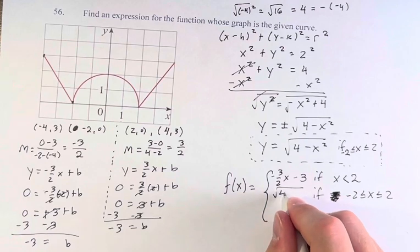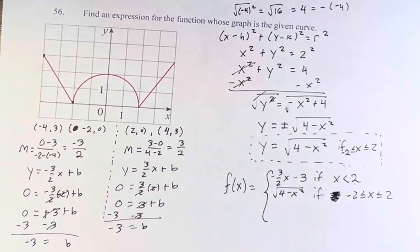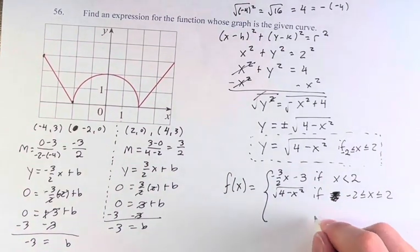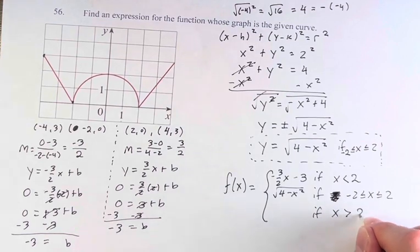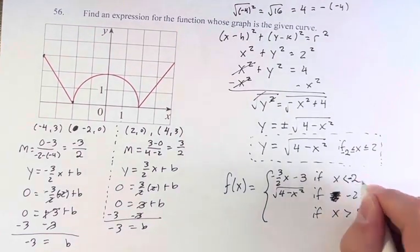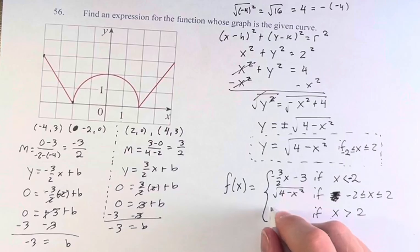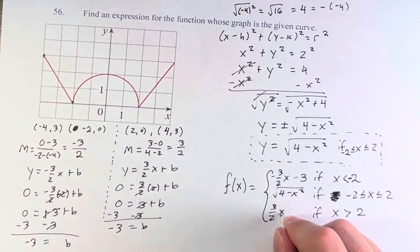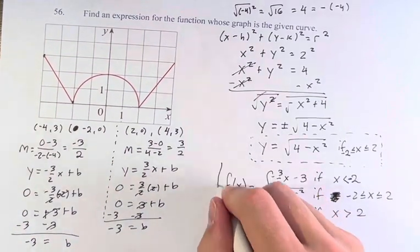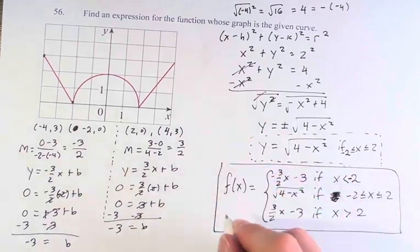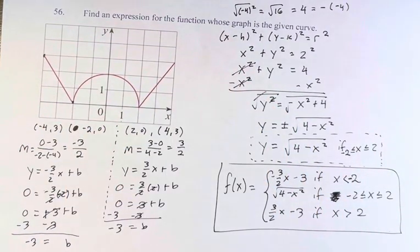Then it's this equation right here, √(4 - x²), the top half of that circle. And then if x is greater than 2, don't forget the negative there. I keep forgetting those. It's positive 3/2 x - 3. And this is the expression for this function, which is represented with this slightly complicated, but simple once you break it down, graph right here.